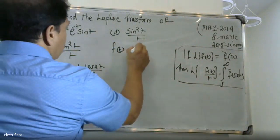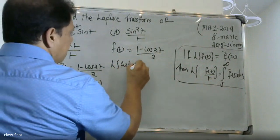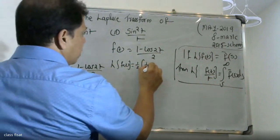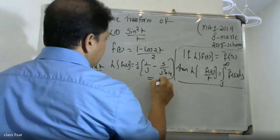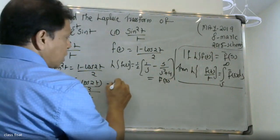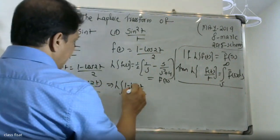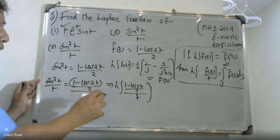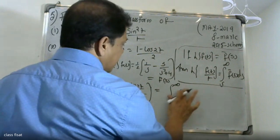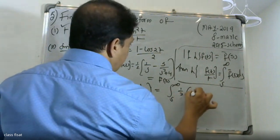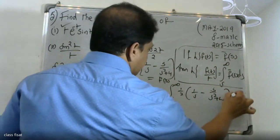Laplace transform of f of t for F(s). Laplace transform of f(t) by t. Then Laplace transform of f(t) by t is 1 by 2 into Laplace transform of 1, which is 1 by s, and Laplace transform of cos 2t is s by s² plus 4. Therefore, Laplace transform of (1 minus cos 2t by 2) by t.